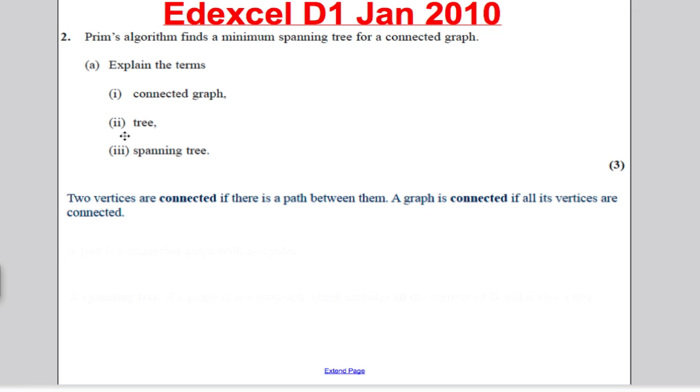What's a tree? A tree is a connected graph that doesn't have any cycles in it.